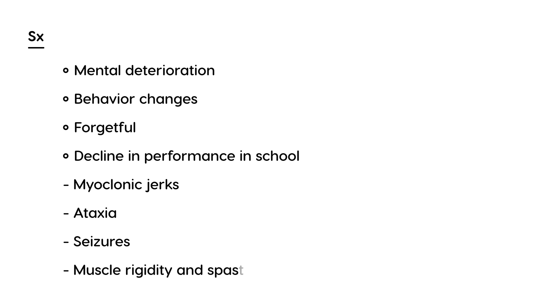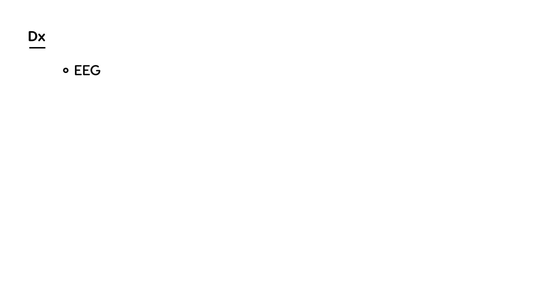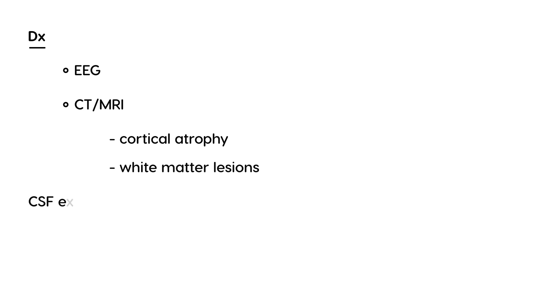Additional symptoms include muscle rigidity and spasticity, and the condition can also progress to blindness and dysphagia — difficulty swallowing. Diagnosis involves an EEG, since the child has developed seizures, and brain imaging such as CT and MRI, which will show cortical atrophy and in particular white matter lesions. The cerebrospinal fluid is also examined and will show high levels of antibodies.